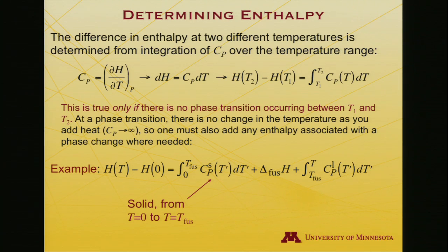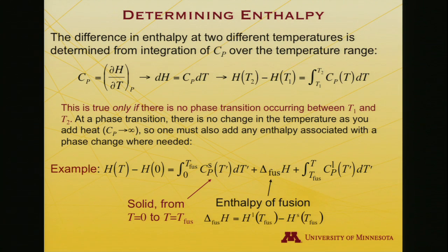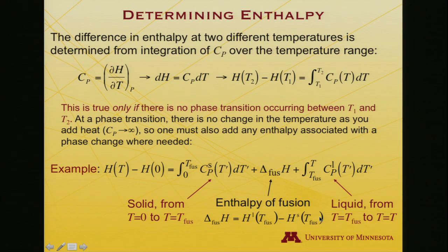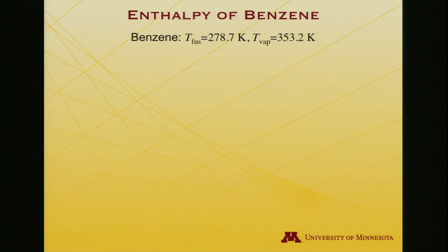The liquid will have a distinct heat capacity from that of the solid. So to summarize: integrate the solid from T = 0 to T_fusion, add the enthalpy of fusion — which is the enthalpy of the liquid minus the enthalpy of the solid at the fusion temperature — and then integrate the liquid's heat capacity. Let me show you what that looks like in practice with some experimental data.